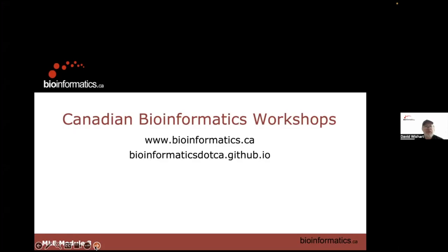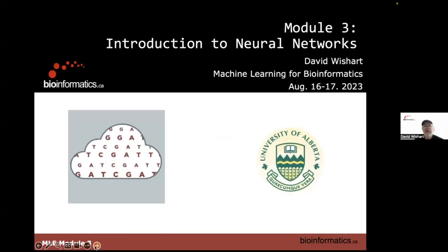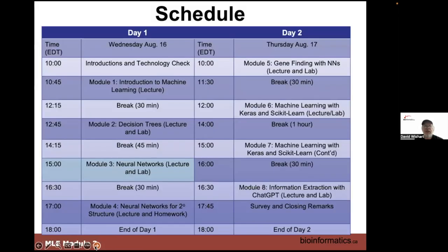All right, so we're starting into module three, same usual things. What we're now going to do is switch from decision trees to neural networks. This is the granddaddy of original machine learning. It's the basis for deep neural nets, it's the basis for convolutional neural nets. But we're just going to learn the simple artificial neural net, or ANN, because we only have two days to work on this — about an hour and 20 to an hour and a half to cover this one.